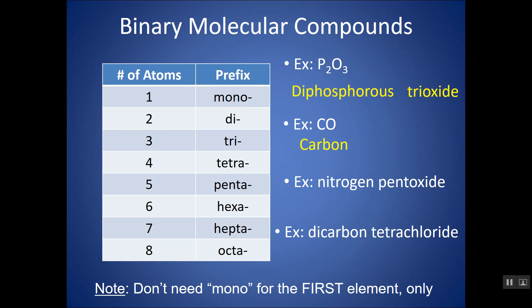However, if the second element has a subscript of 1, we should keep the mono there — so it would be monoxide. Remember the second element ends in -ide. You'll notice I drop one of the vowels for monoxide. With oxygen, because it starts with a vowel, you can often drop the trailing vowel (the O or A) from prefixes like tetra, penta, hexa, and just keep the O from oxygen. We'll see that in the next examples too.